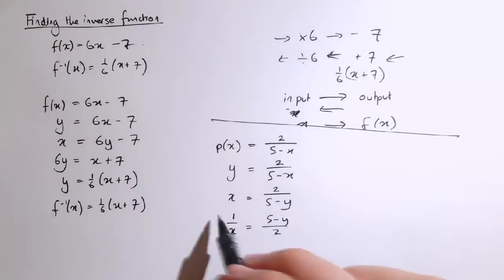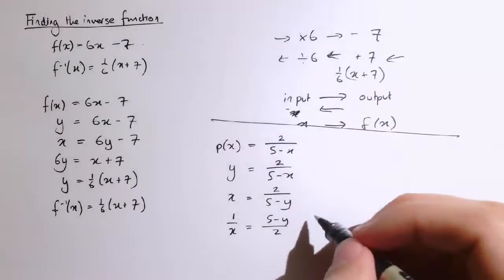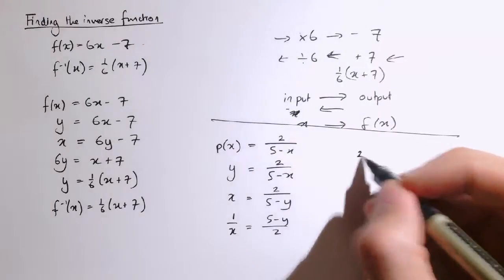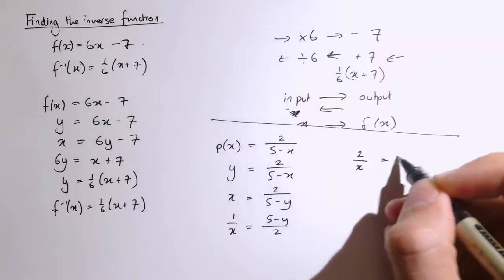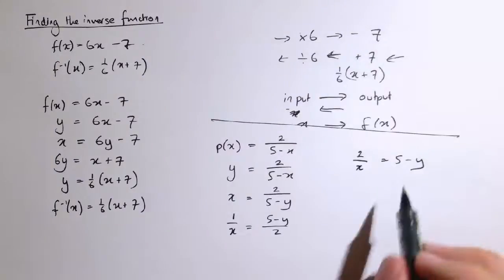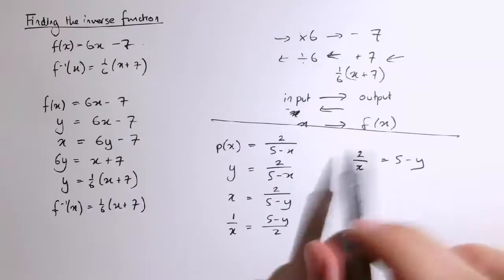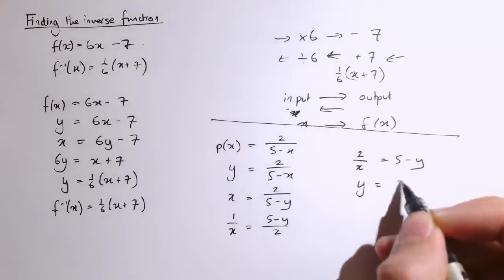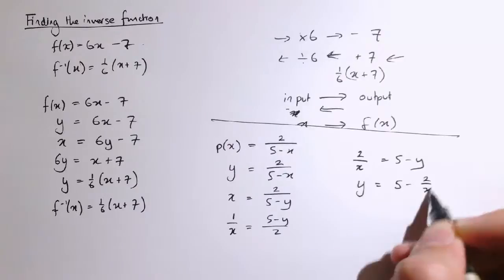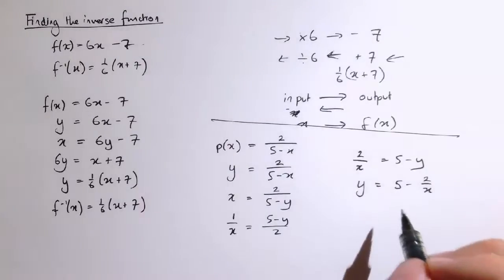1 over x equals 5 minus y over 2. And then I'll multiply both sides by 2. That will give me 2 over x equals 5 minus y. And then let's add the y to both sides and subtract the 2 over x. So I get y equals 5 minus 2 over x.